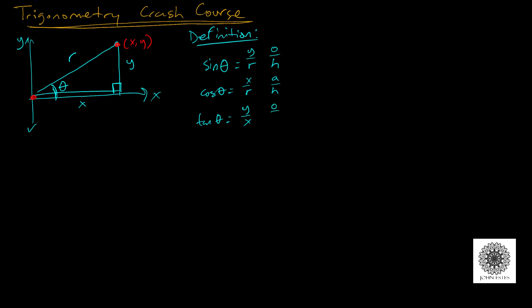One way to remember these is the phrase 'Oscar had a heap of apples.' Three other trig functions are easily remembered as reciprocals: cotangent is the reciprocal of tangent, secant θ is the reciprocal of cosine, and cosecant θ is the reciprocal of sine.